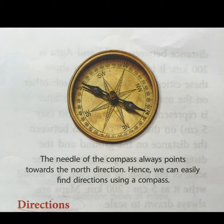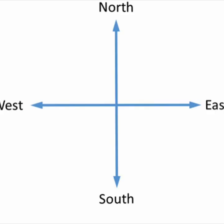Whether it is the map of India, Asia, or even the map of the whole world, we always keep in mind the four basic directions. They are: North direction, East direction, South direction, and West direction.